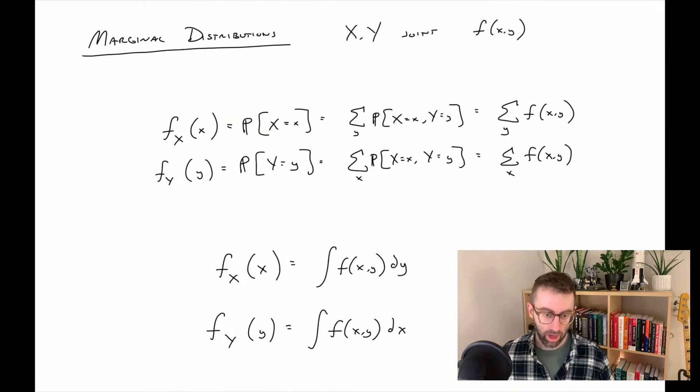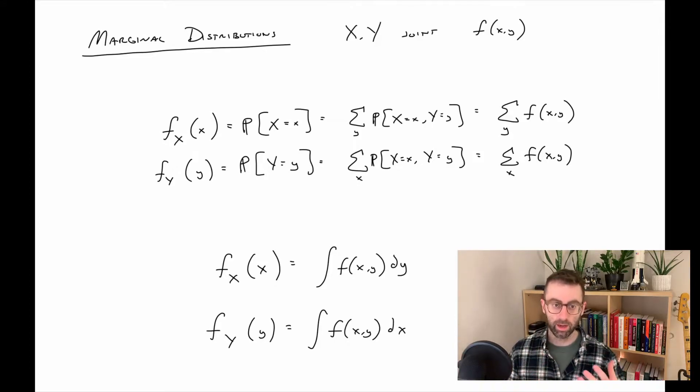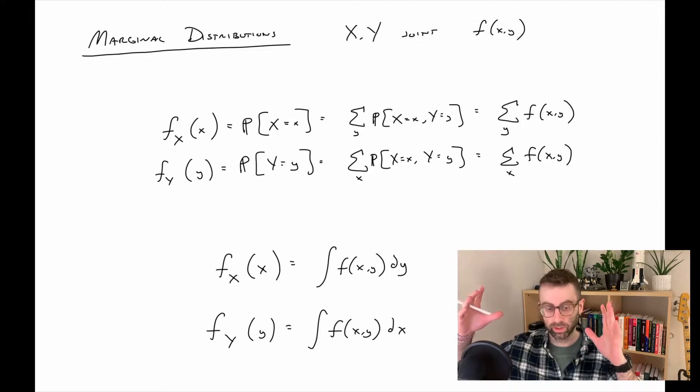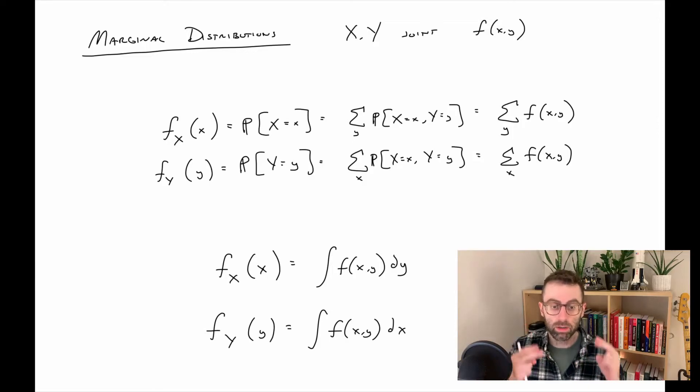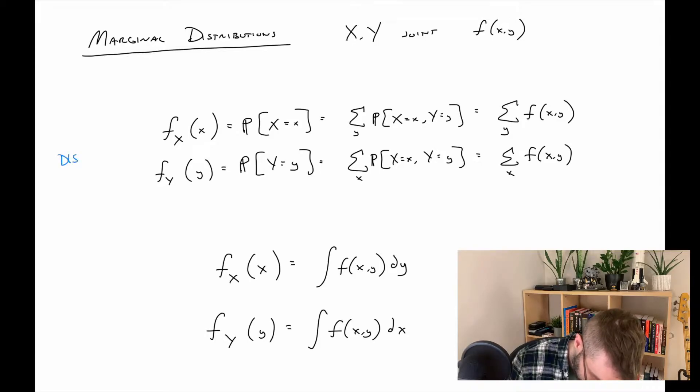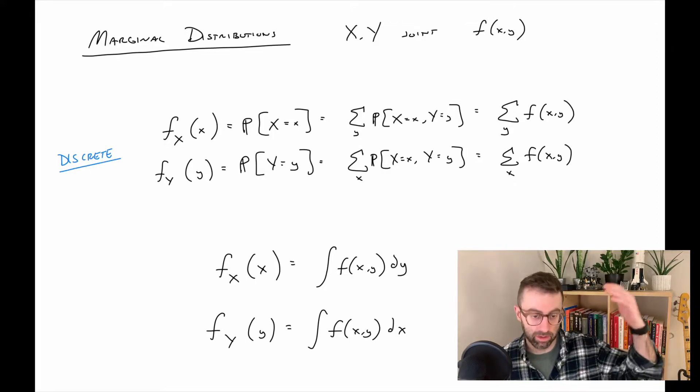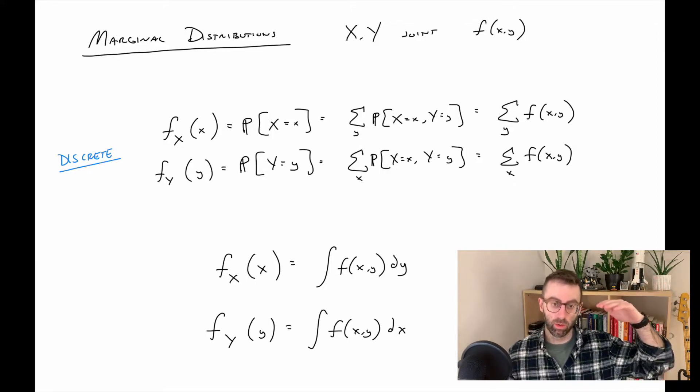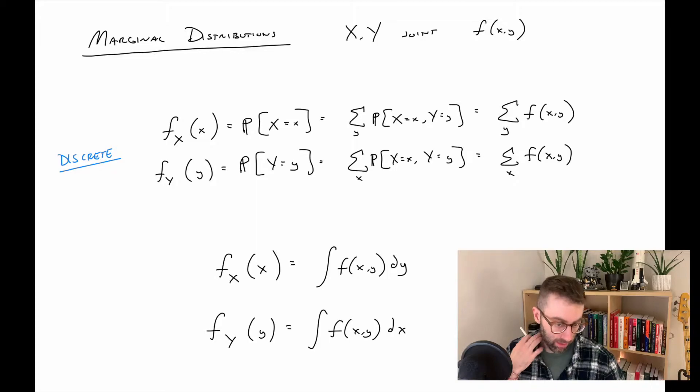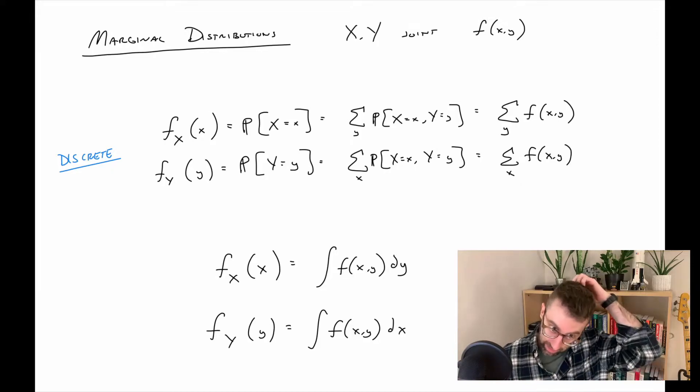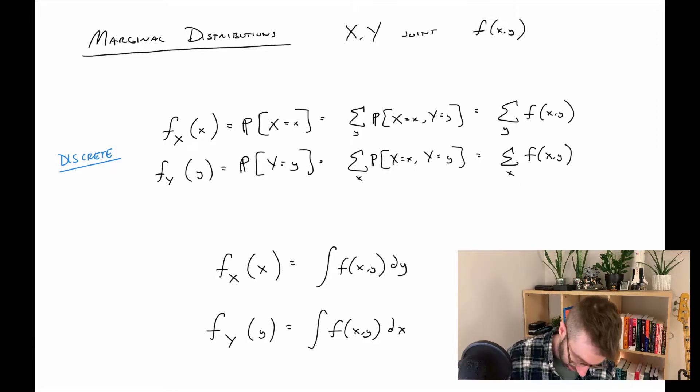Another thing we can do when we're dealing with multiple variables at the same time is start with a joint distribution that tells us the distribution of X and Y together, but then what we call marginalize and get just the distribution of one random variable at a time. For discrete, the marginals would look like this. The marginal for X would be, you'd essentially sum over the Y values, or basically you're averaging out the Y. Or for Y, you're summing over X to sort of average out the effect of X.